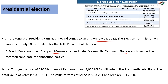This year, 774 parliament members and 4,033 MLAs are able to participate in this voting procedure. This is the overall vote count — a total of approximately 10,98,755 electoral votes.